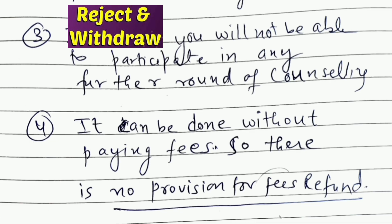If you choose this option, you will not be able to participate in any further round of counseling. Choice 4 can be done without paying fees. Once you are not happy with any allotted seat and you don't want to participate, you don't pay fees — you just do this and exit from the counseling. There is no provision for paying fees in this option.